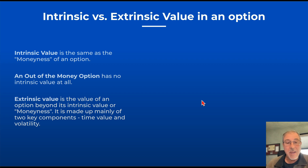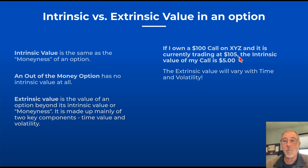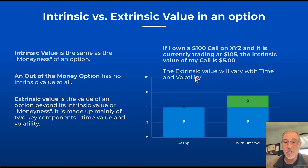Extrinsic value is made up mainly of two key components: time value and volatility — that's why it's important for our discussion today. If I own a $100 long call on XYZ and XYZ is currently trading at $105, the intrinsic value of my long call is $5. The extrinsic value can vary at any time with time and volatility.